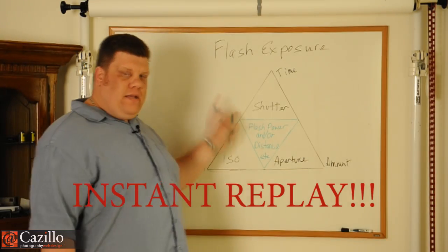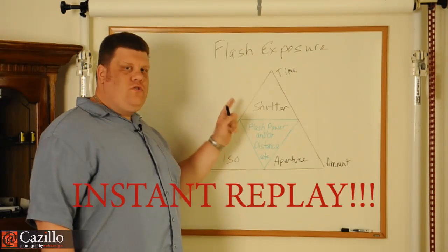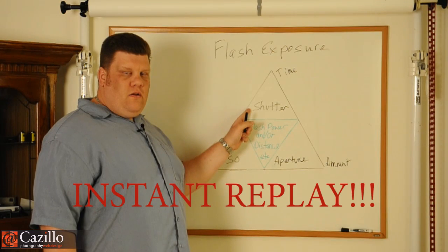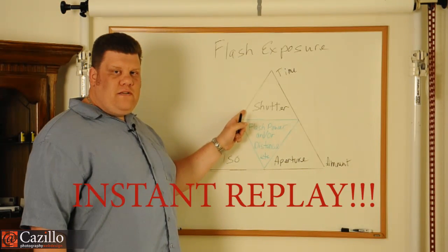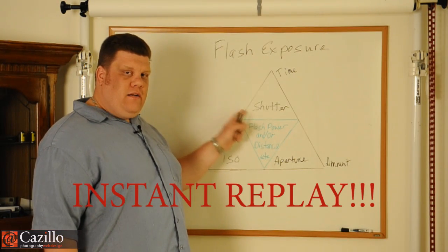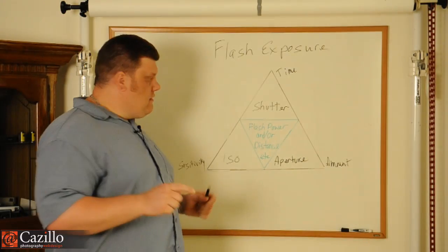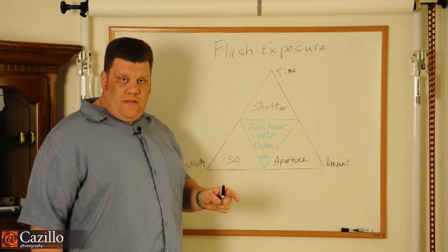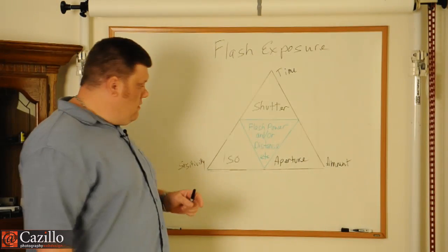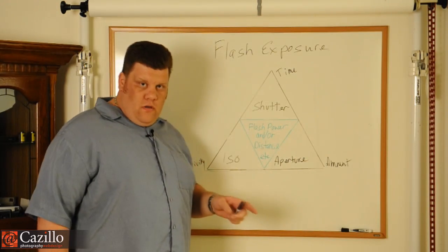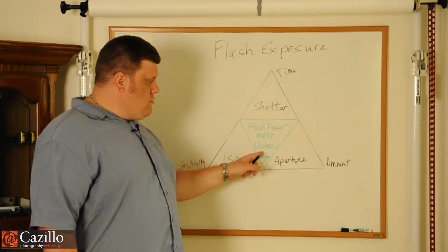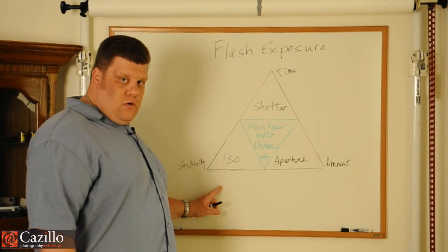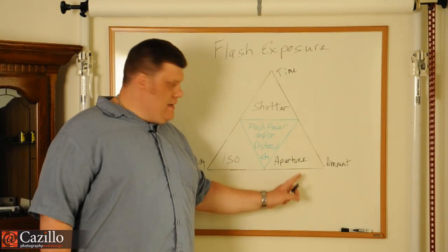Rewind. The shutter speed only affects the ambient light in the scene. Got that? Shutter speed only affects the ambient light in the scene, not the flash. So, in other words, the flash can be controlled by the ISO as well as the aperture.